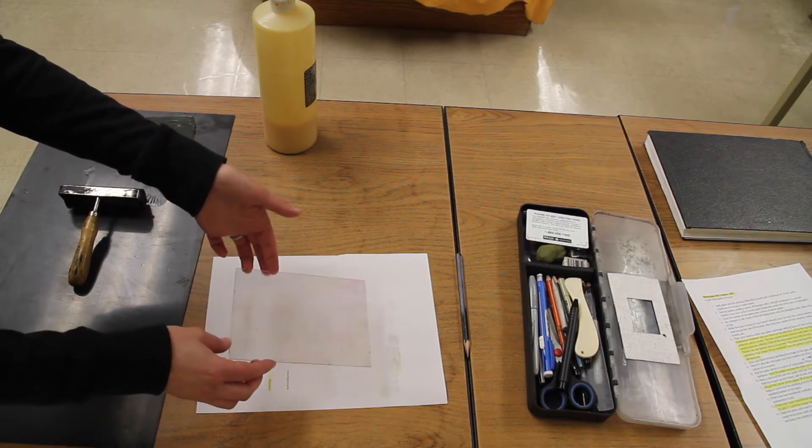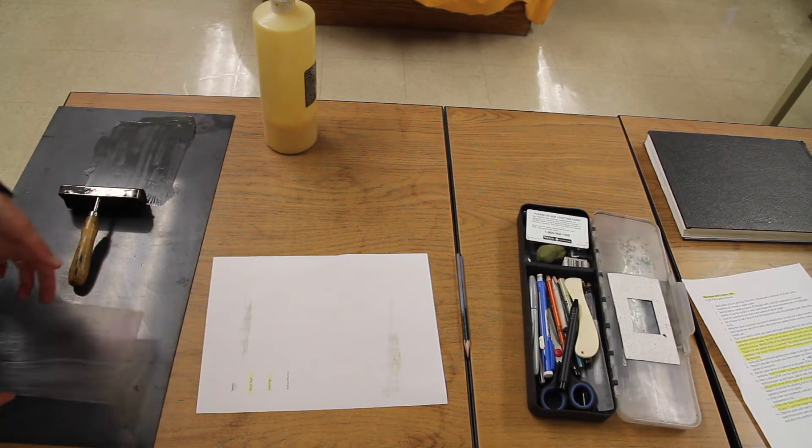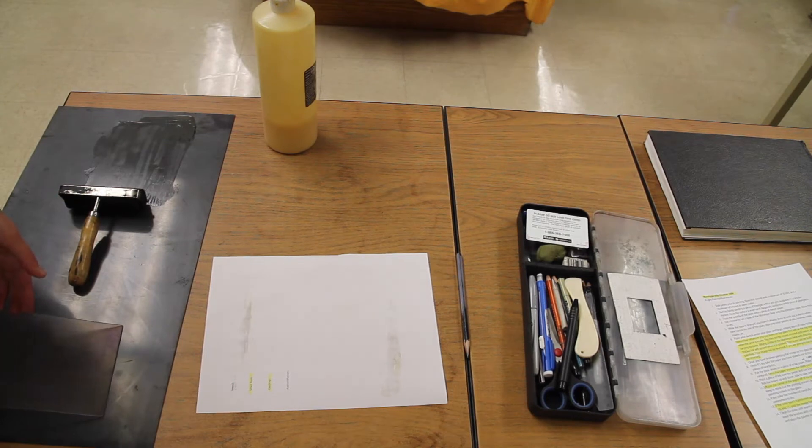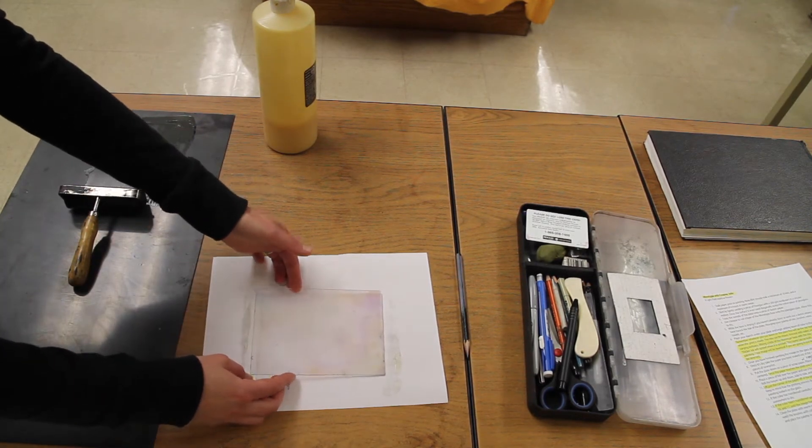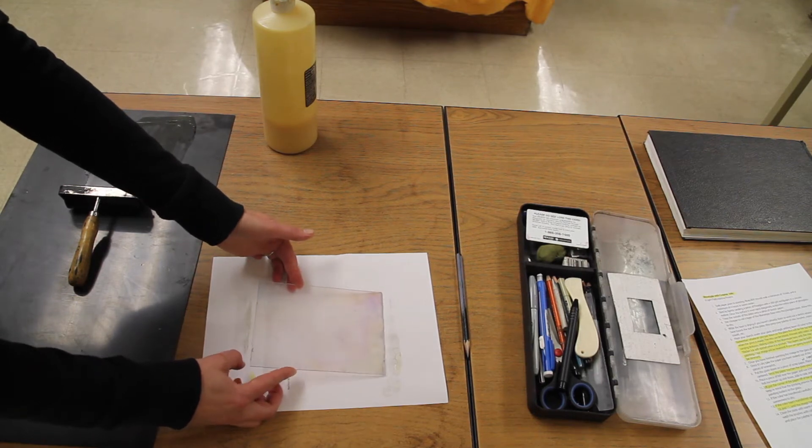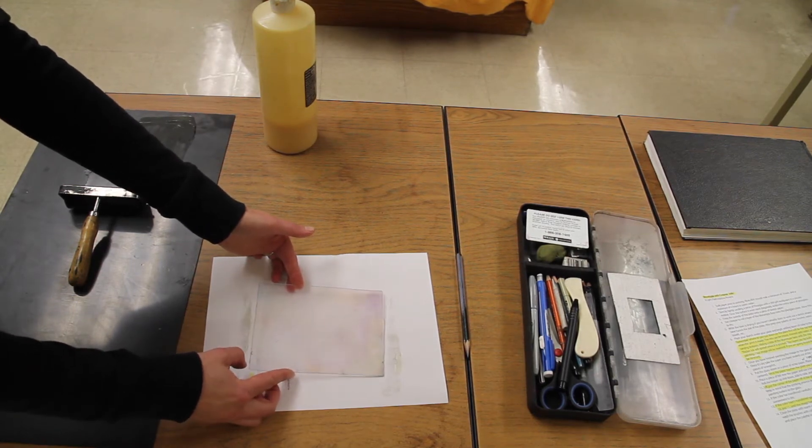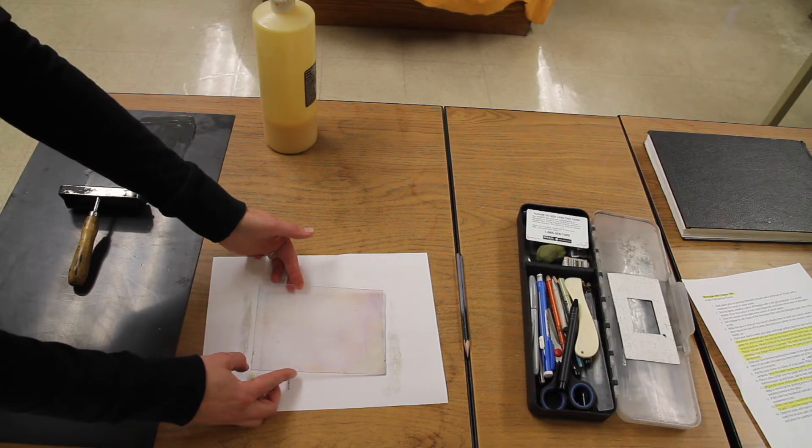If you coat it before you plan, that gives you time to plan while you're waiting for this to dry. If you end up in a situation where you have a plan and want to print it right away, you can blow dry this before adding the ink. We can always speed up the drying process.